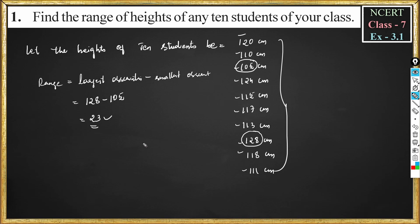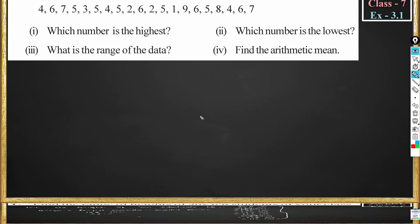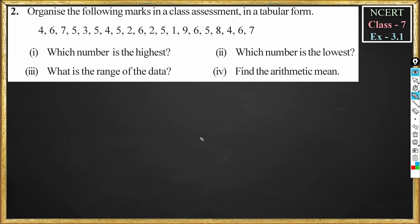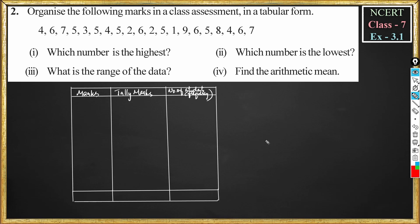Exercise 3.1 question number 2. Organize the following marks in a class assessment in a tabular form, then find which number is the highest, which number is the lowest, what is the range of the data, and find the arithmetic mean. Now we'll organize the given marks in a tabular form. We should draw a table with marks, tally marks, and number of students.